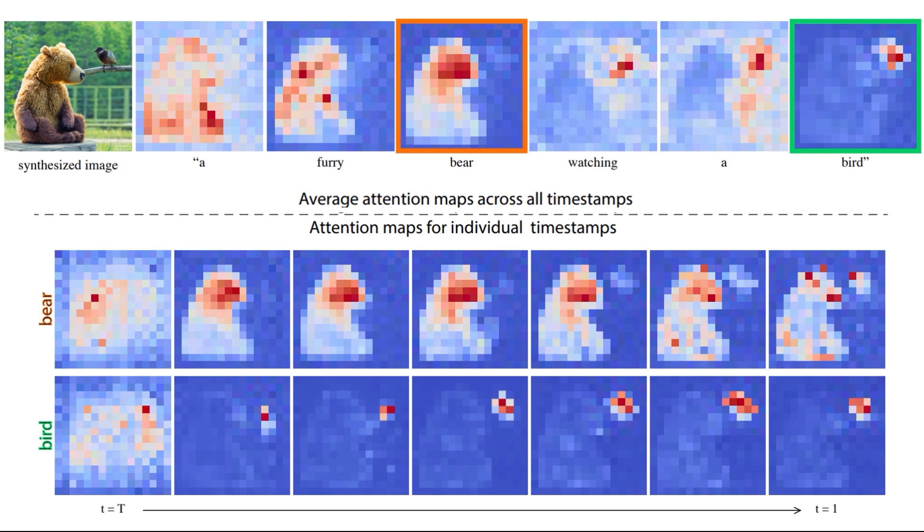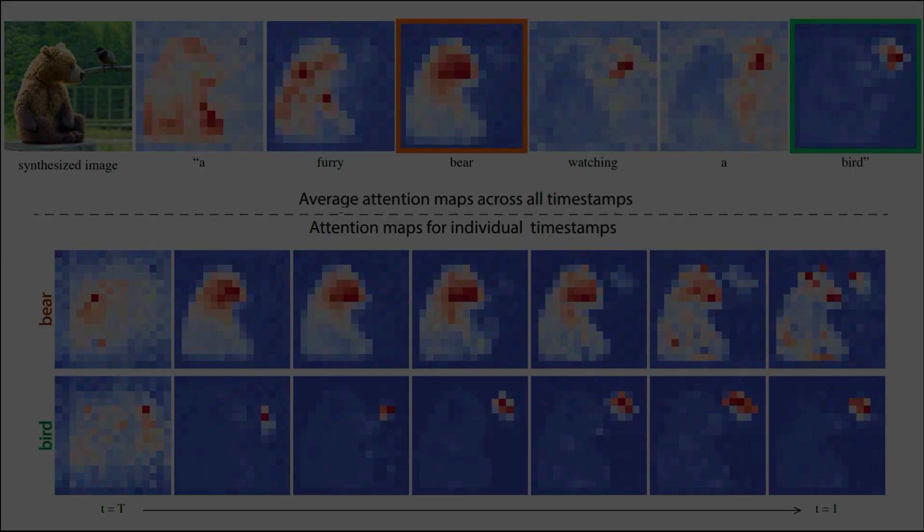Another cool observation is that when we look at how this cross attention evolves throughout the denoising process, we see that early in the diffusion step, the structure of these concepts are formed and we don't have to wait until the end.